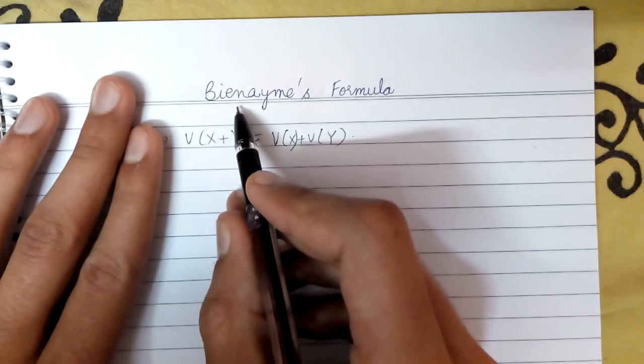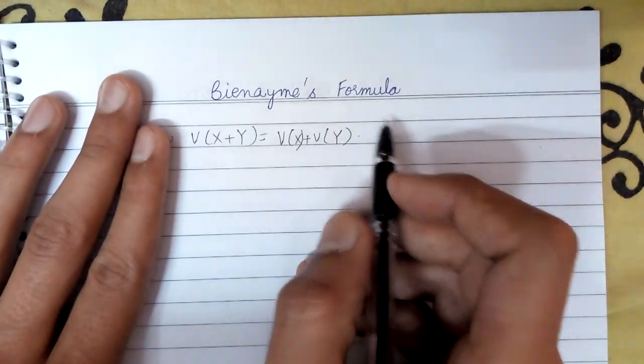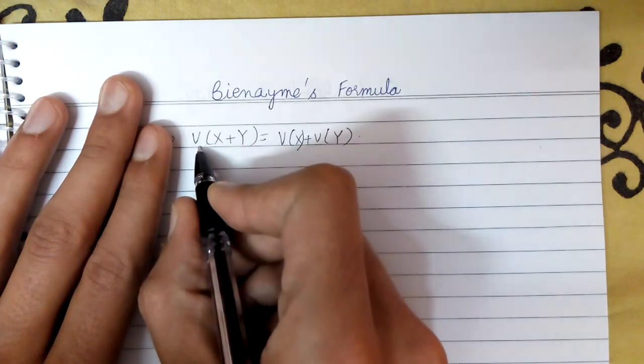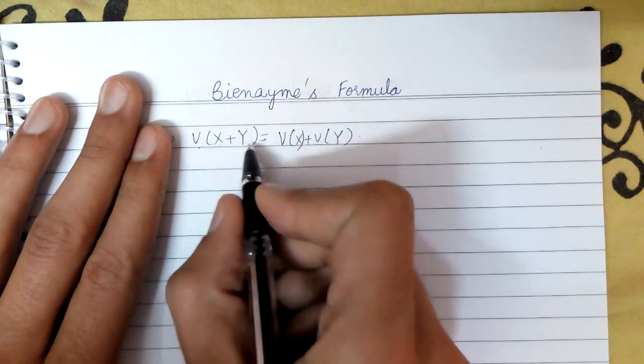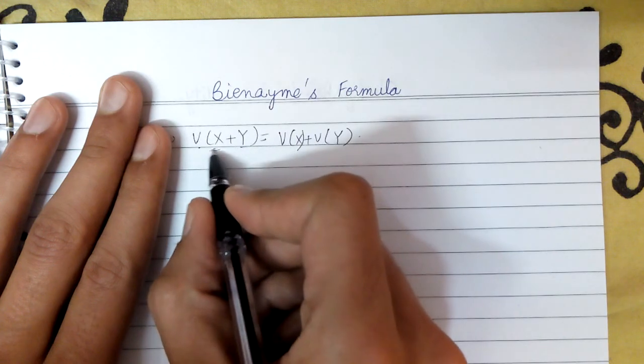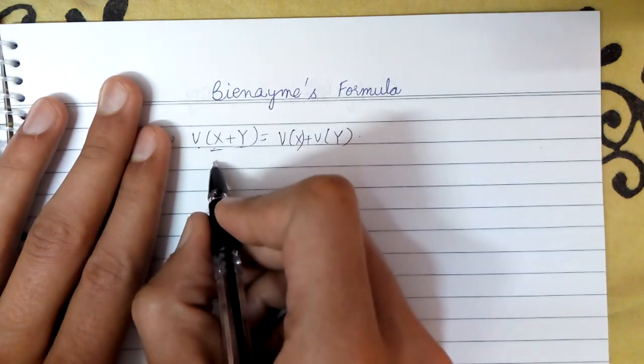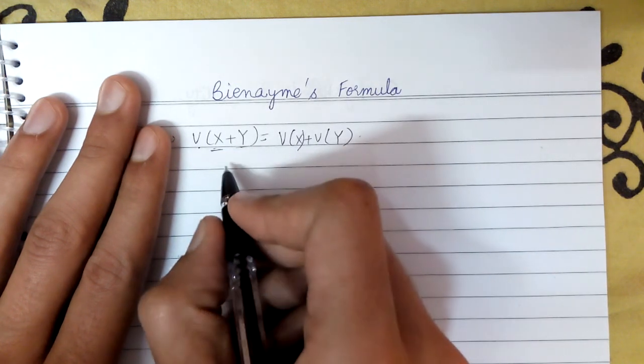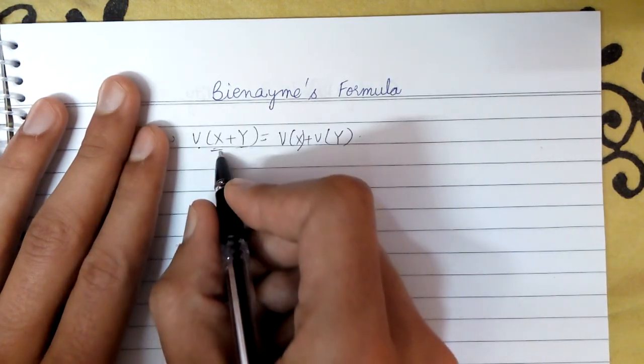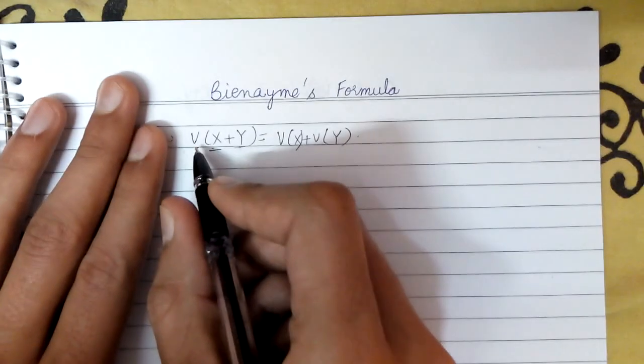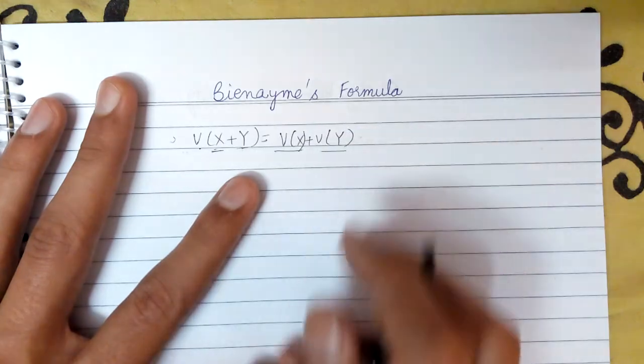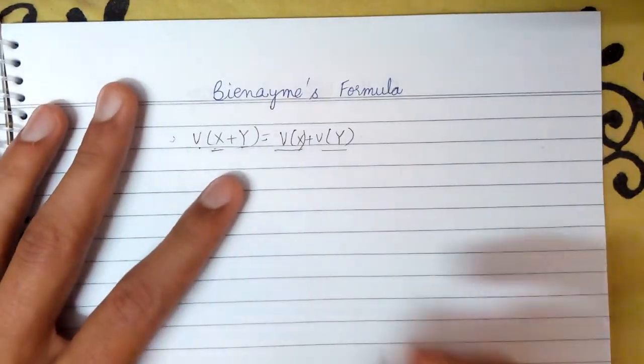And this lecture we will be looking at Bienayme's formula. So Bienayme's formula just states that the variance of two independent random variables, so these are two variables which are random and which vary independently of each other. So when we take the sum of those variables and calculate its variance, it is equal to sum of individual variances of those two independent random variables.